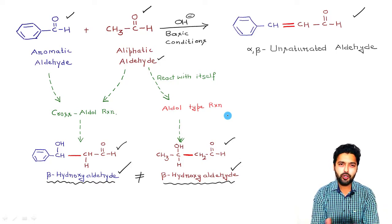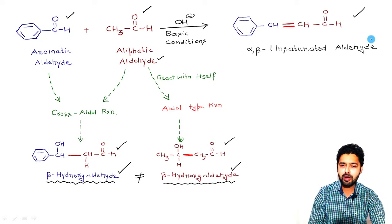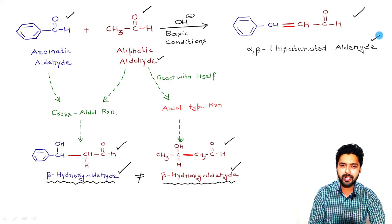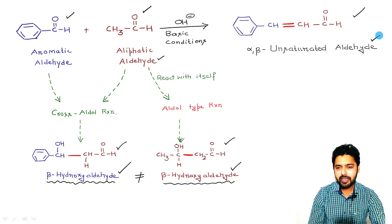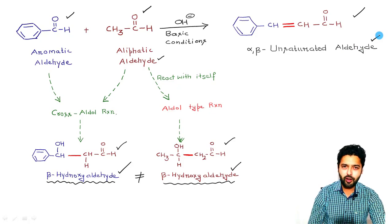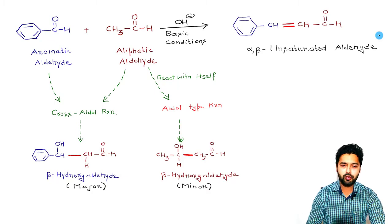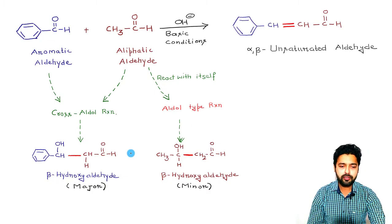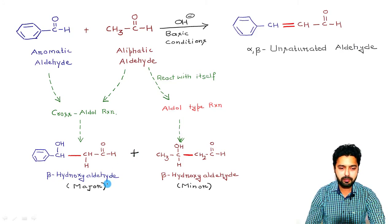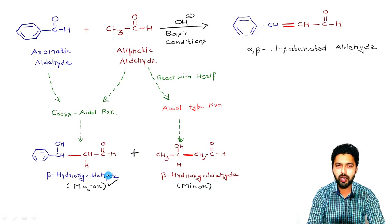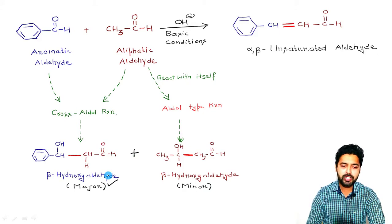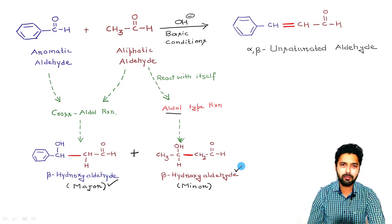The question is how we will be getting this alpha-beta unsaturated aldehyde at the end of this reaction. Out of the two products, the cross-aldol product will be the major product, and there is a valid reason why this will be formed in the major amount. On the other hand, the aldol type of product will be formed in the minor amount.